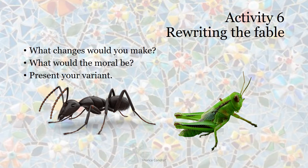What we could encourage our learners to do next is to rewrite the fable. Before doing this, we can start a discussion and ask students what changes they would make and whether they will leave the same moral. At the end they could present their variant. It is also good to do this activity in small groups and make sure that every member of the group is involved. That is why it is good to assign a leader in each group who will be responsible for ensuring that each member contributes.